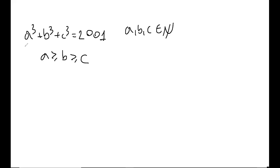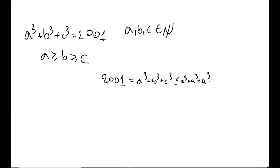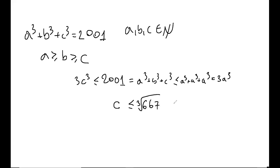Now that being said, we can estimate the size of a, b, and c. We know 2001 = a³ + b³ + c³. Since c ≤ b ≤ a, we have a³ + b³ + c³ ≤ 3a³, so a³ ≥ 667. On the other hand, a³ + b³ + c³ ≥ 3c³, so c³ ≤ 667, meaning c ≤ the cube root of 667.